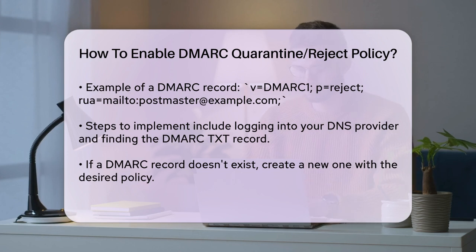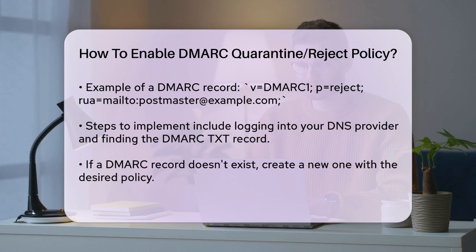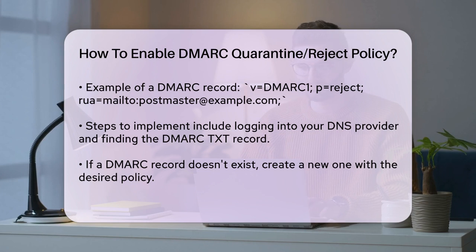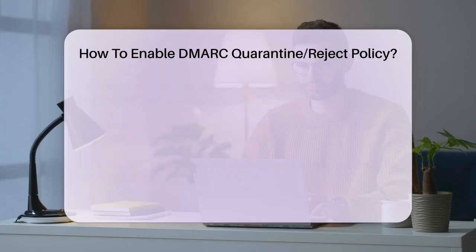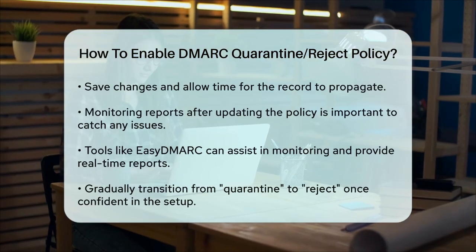Three, update the policy by changing the P tag to either quarantine or reject. For example: v=DMARC1; p=quarantine; rua=mailto:postmaster@example.com, or v=DMARC1; p=reject; rua=mailto:postmaster@example.com. Then save the changes and ensure the record propagates, which may take a few minutes to a few hours.